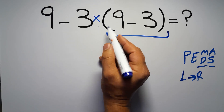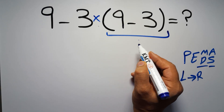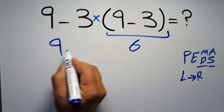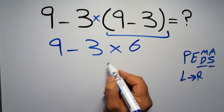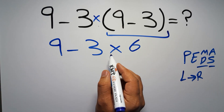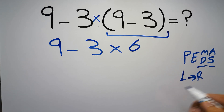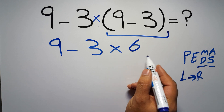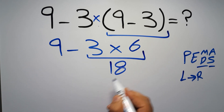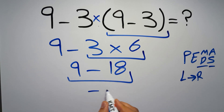So first we have to do this parentheses: inside we have 9 minus 3 which equals 6. So now we have 9 minus 3 times 6. We have one subtraction and one multiplication. According to PEMDAS, multiplication has higher priority than subtraction, so first we do 3 times 6 which equals 18. Then 9 minus 18 which equals negative 9, and this is our final answer.